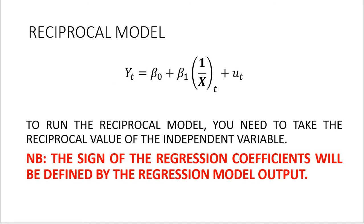So this is the very basic form of the reciprocal regression model. The interpretation of the coefficient is basically identical to the linear model. The only difference is that as the independent variable, instead of x, you analyze 1 over x.